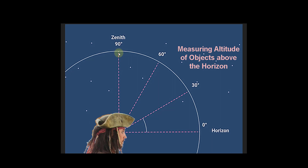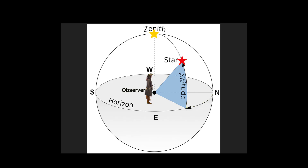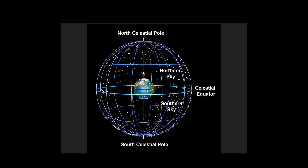The observer sees the zenith at an altitude of 90 degrees. Now this observer is looking at this red star and notices the red star is about 45 degrees above the horizon. He sees another star — a yellow star — at the zenith. This yellow star is 90 degrees above the horizon, so the altitude of the yellow star is 90 degrees and the red star is 45 degrees altitude.